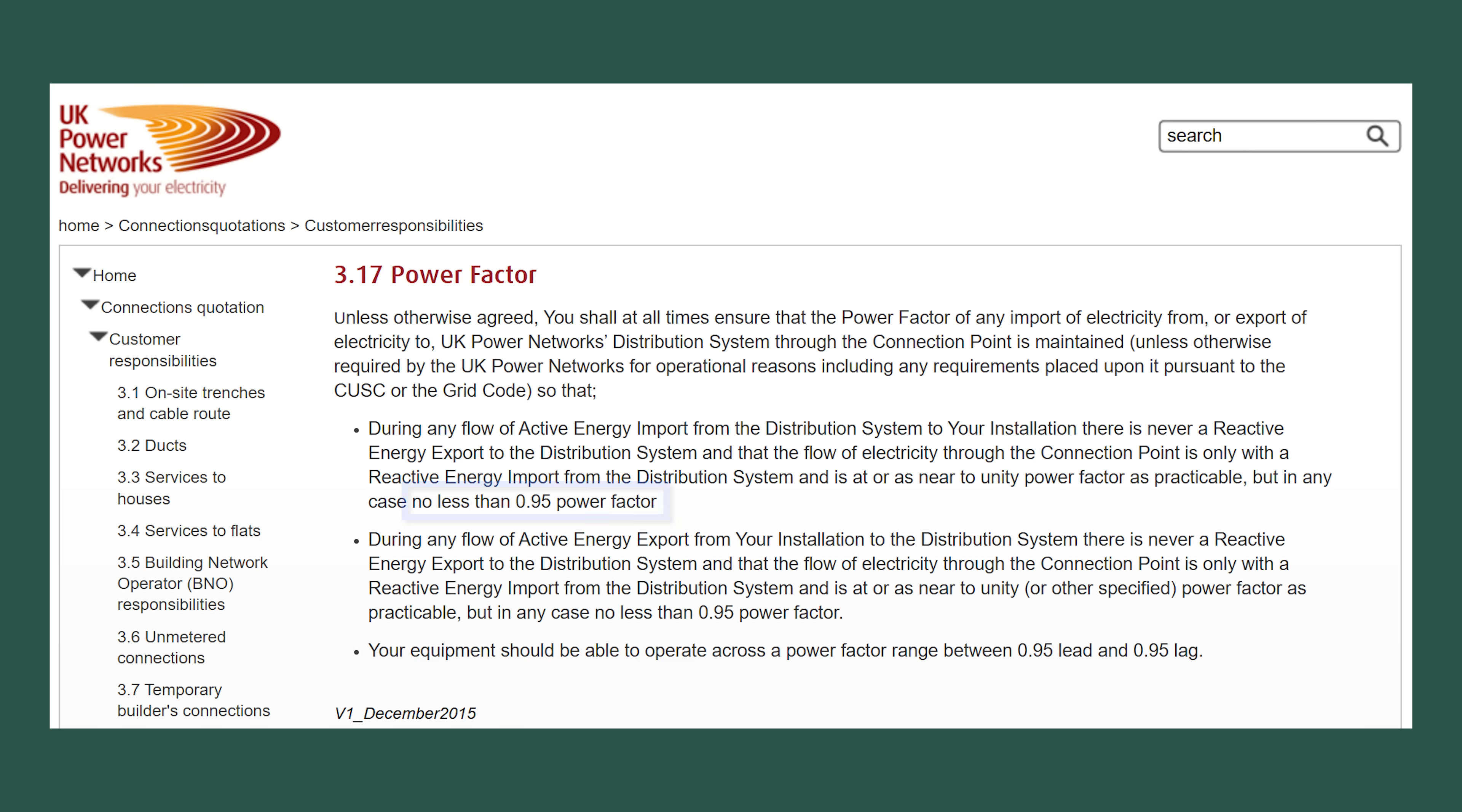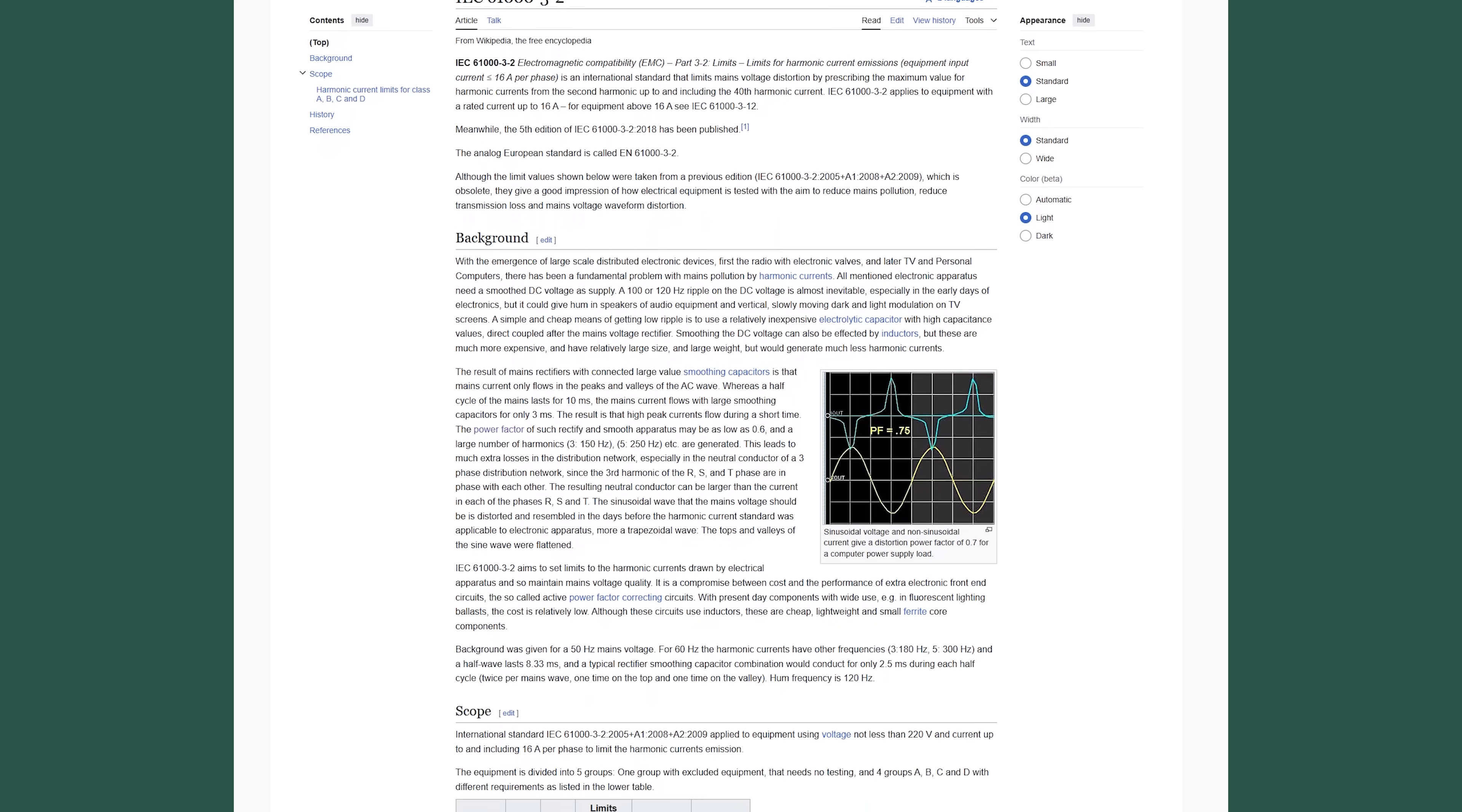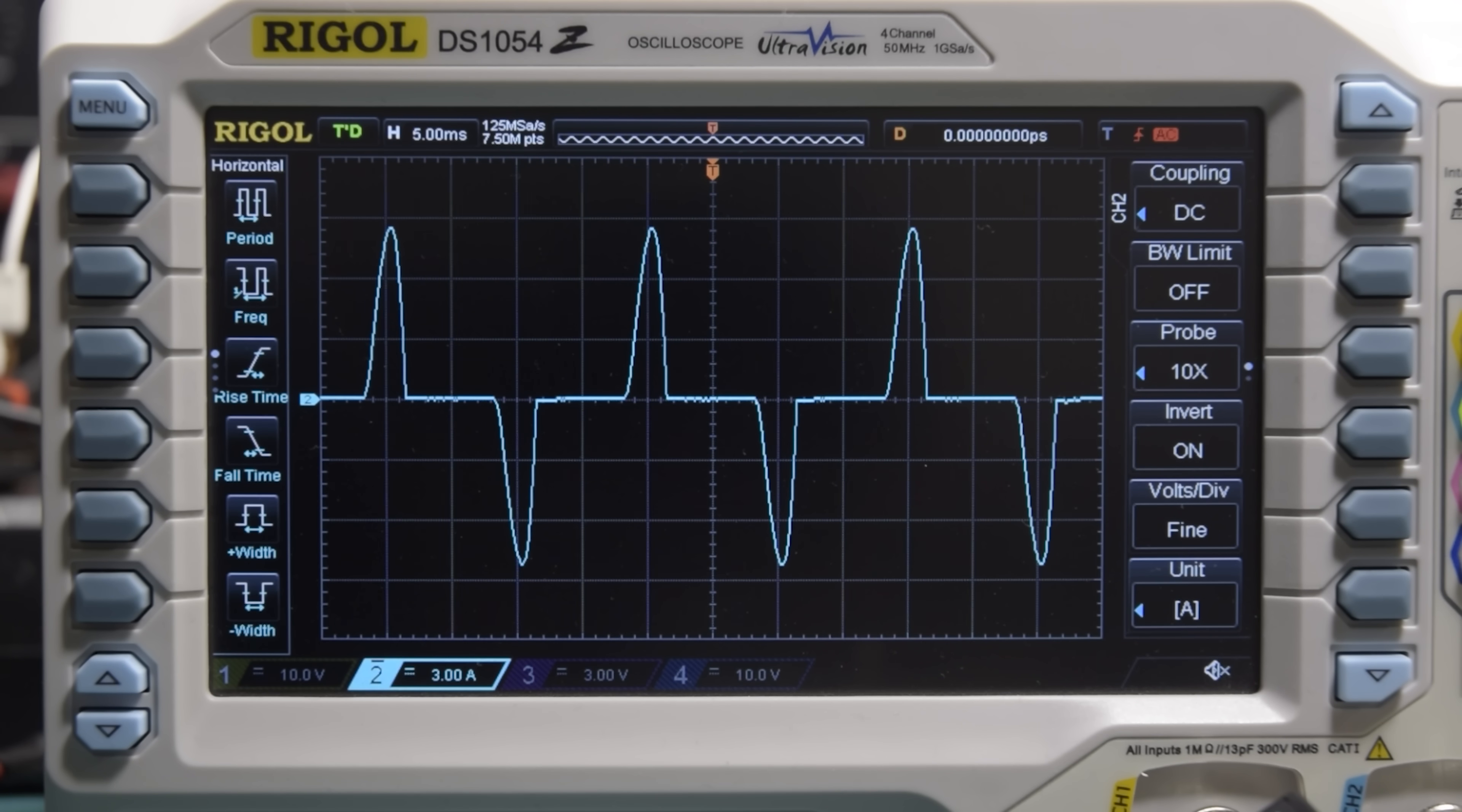Because of this, grid operators in many countries have strict requirements on the power factor drawn by large consumers like factories, and for us domestic users, the devices and appliances we buy must conform with local regulations and standards, like IEC 61000-3-2, which dictates limits for harmonic current emissions, essentially the power factor, for anything over 75 watts. So we need a way to clean up this peaky current waveform from our rectifier and make it more sinusoidal, and we can do this with a power factor correction circuit.